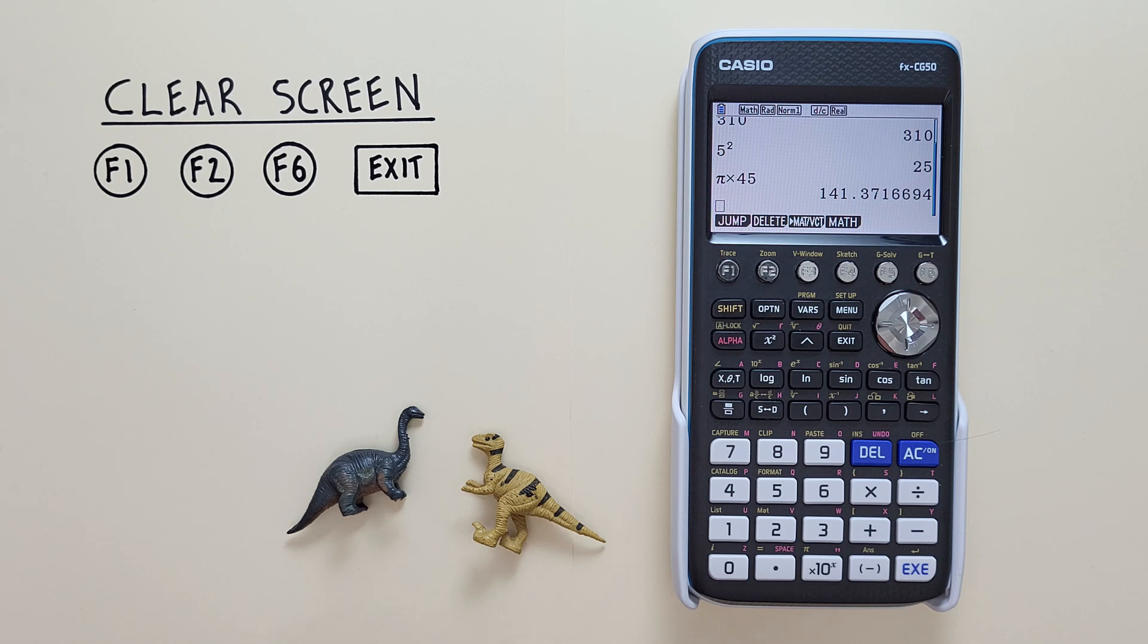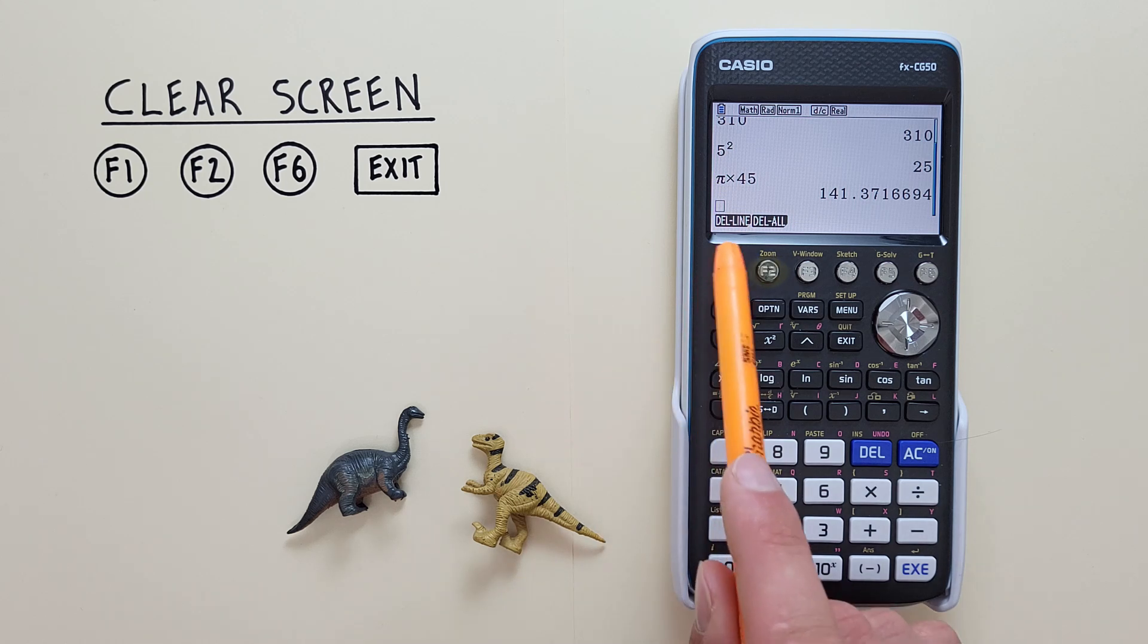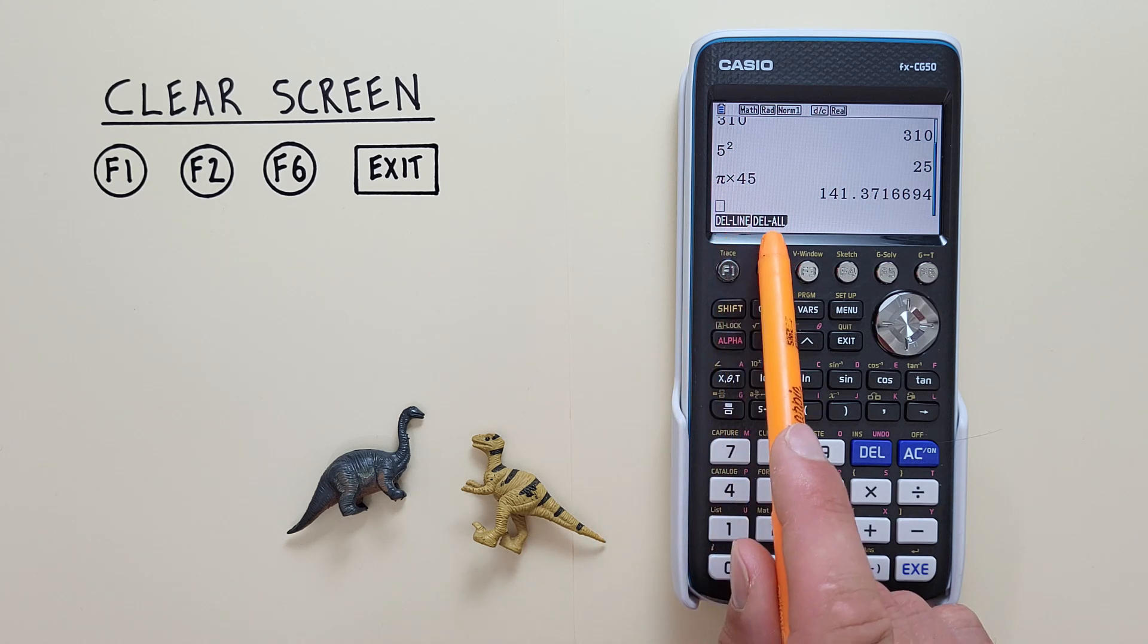To begin clearing our screen, we need to use the F2 or delete button here. That gives us these two options, delete line or delete all.